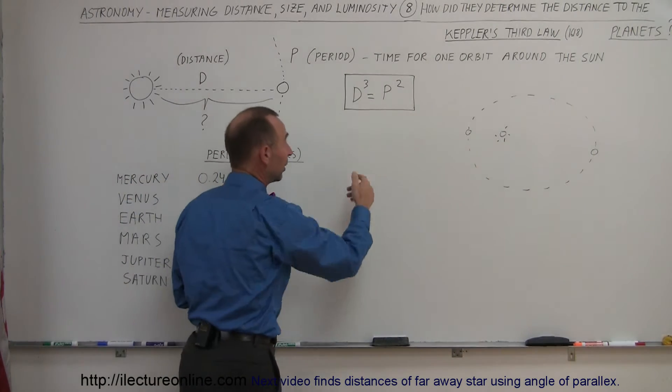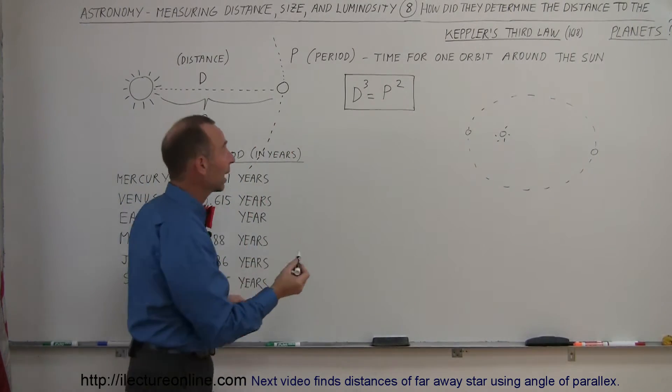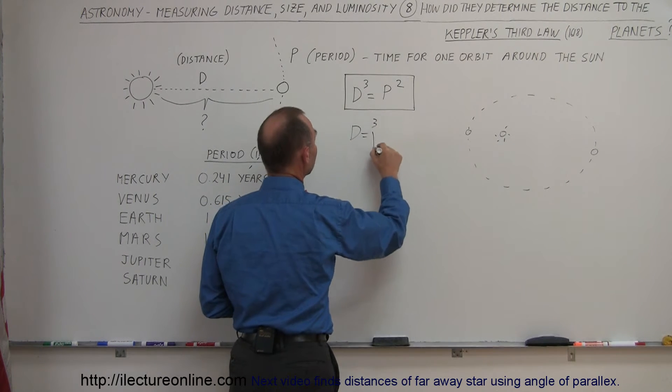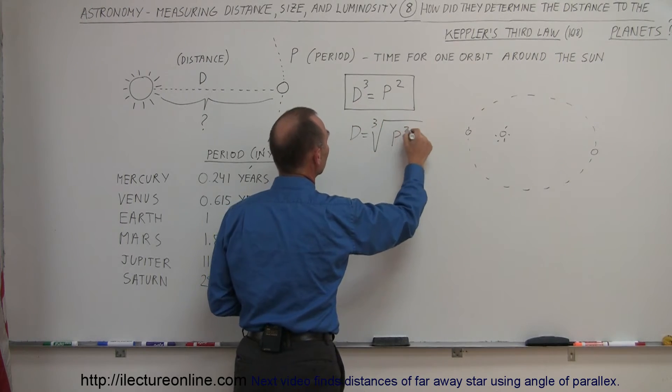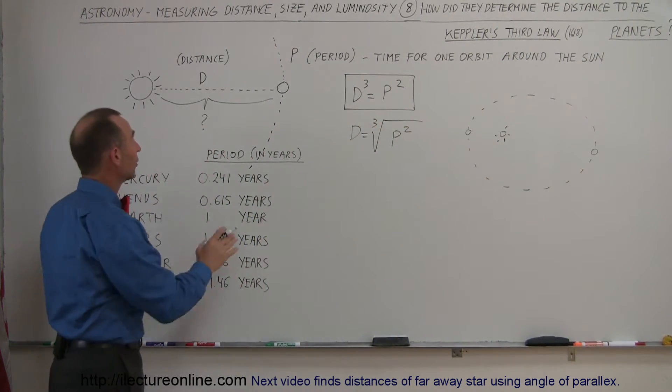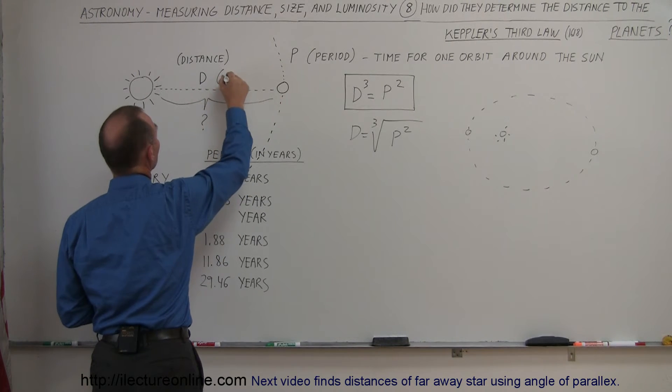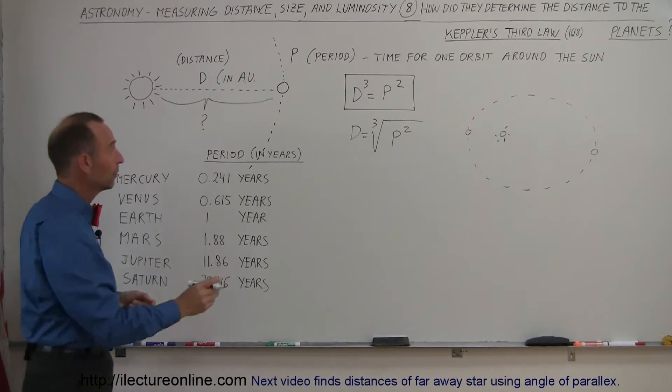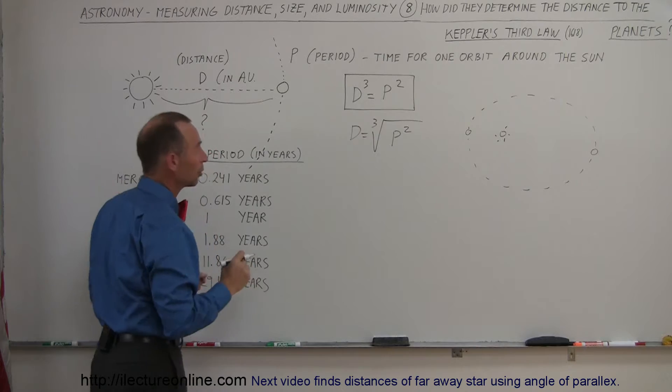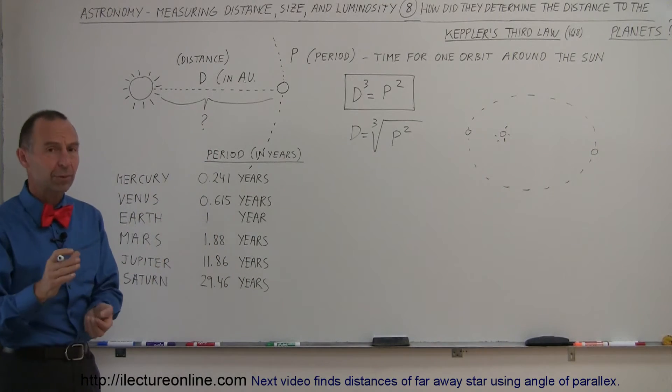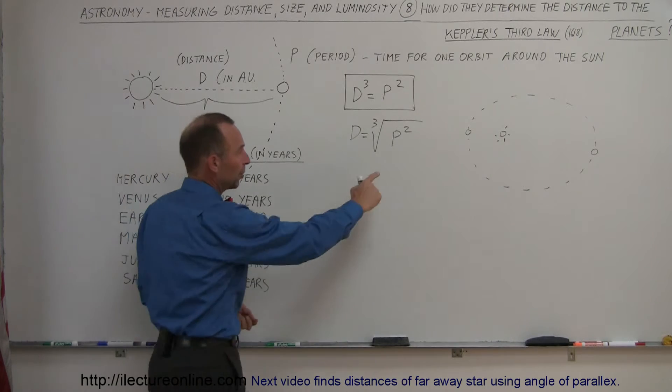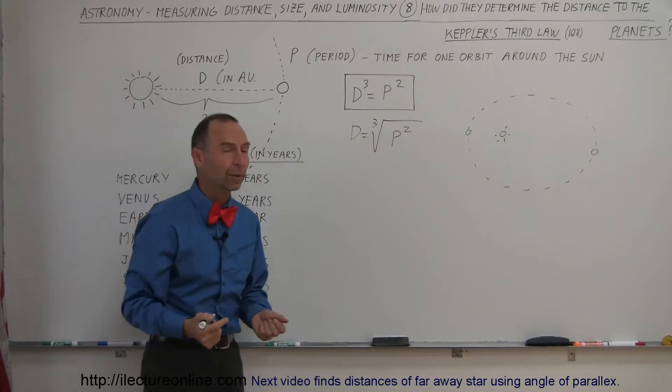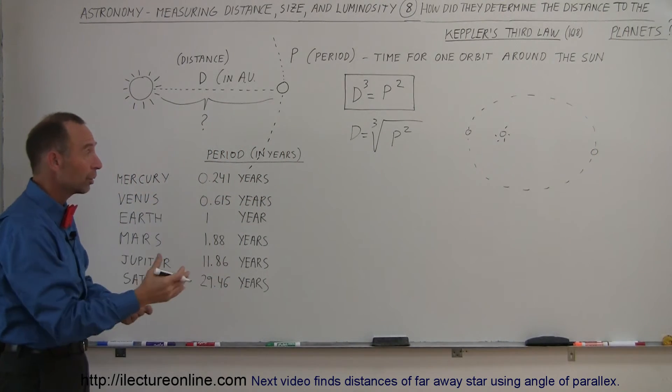Therefore, we can go back to the formula. If that was true, then all we had to do to find out the distance to the planets was to take the cube root of the period squared. In order to get the right numbers, the distance would have to be expressed in astronomical units. An astronomical unit is the distance from the sun to the Earth. The period would have to be expressed in years. For the Earth, that makes a lot of sense, because if you put one here, one squared is one, the cube root of one is one. So yes, the distance would be one astronomical unit. But he figured out that works for all the other planets.